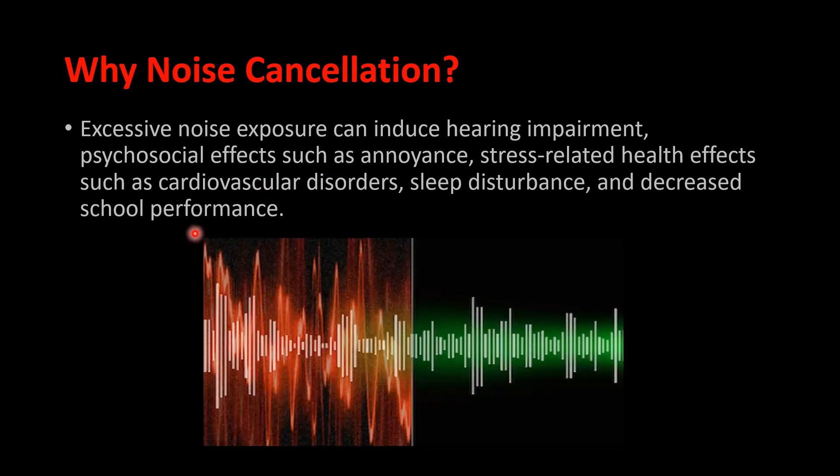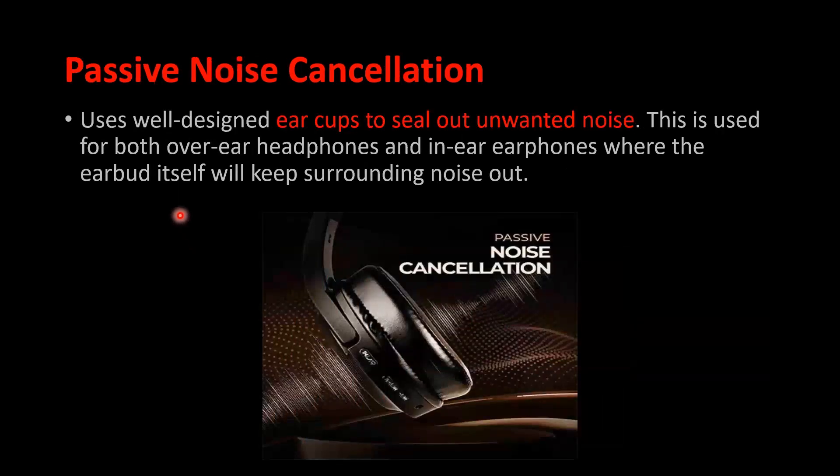So what are the types of noise cancellations that we have? One of them is passive noise cancellation. Passive noise cancellation uses well-designed ear cups to seal out unwanted noise. This is used for both over-ear headphones and in-ear earphones where the earbud itself will keep the surrounding noise out. Keep in mind that this doesn't cancel all of the noise, but it does cancel out the noise up to some extent.